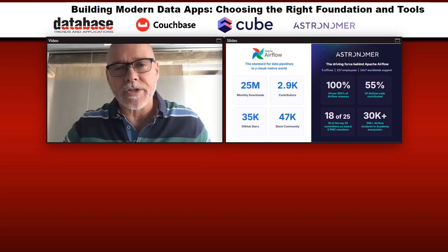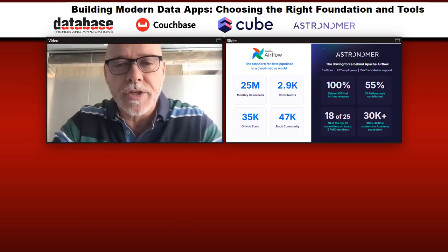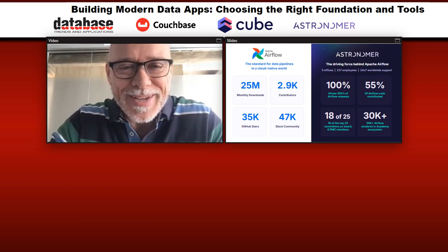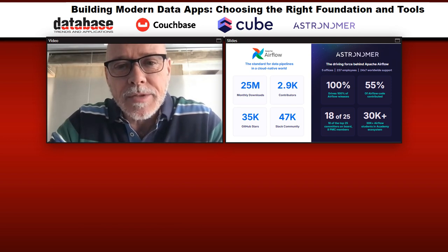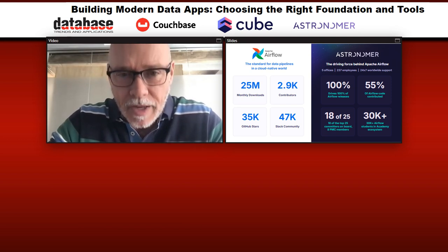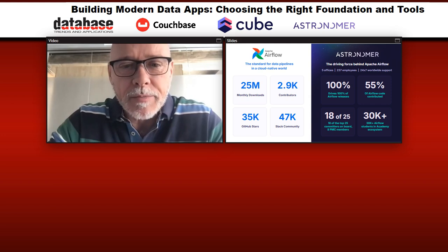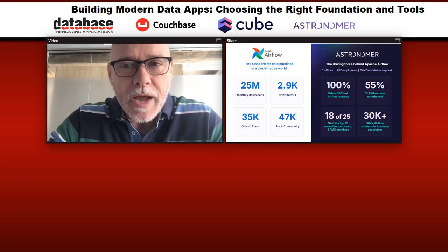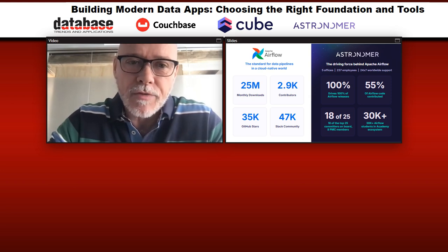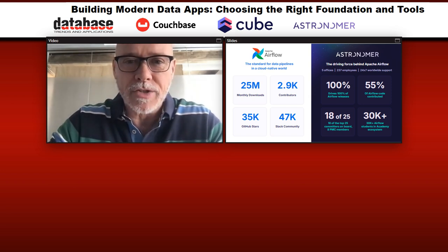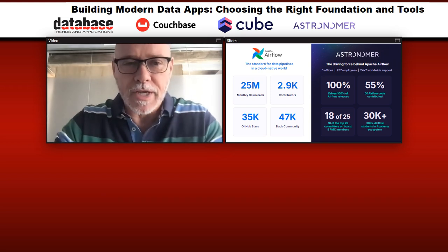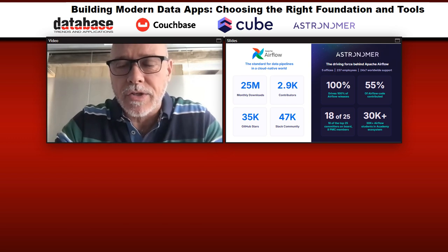Think of Airbnb as essentially one big application for planning your vacation — it needs a lot of data for it to deliver what it needs to deliver, requiring a lot of coordination of data ingestion and analytics models. They built that framework to coordinate all of that. It grew bigger than they ever expected, they open sourced it and donated it to the Apache Software Foundation. Now it's up to 30 million downloads a month. Astronomer is the commercial developer of Apache Airflow, making about 50 percent of the thousands of commits that go into the project.